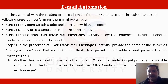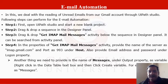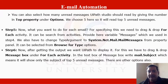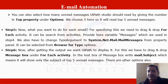Step 4: in the properties of the Get IMAP Mail Message activity, provide the server name as imap.gmail.com and port as 993 under Host. Also provide the email address and password under Login properties. We also need to provide the name for messages under the Output property as a variable - right-click in the text box and click Create Variable, for example name it 'message'. You can also select how many unread messages UiPath should read by giving a number under top priority in Options - here we choose 500, so it will read the top 500 messages.